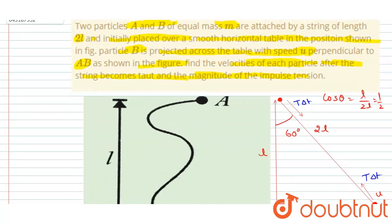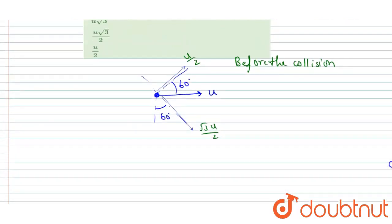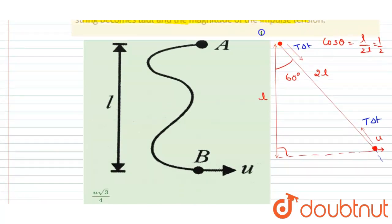Now if you see the question, find the velocities of each particle when the string becomes taut. So let us find out the velocity of A and B now. If you see, this will remain with B as it is, this won't change, only this component will change, and this is A. So A will experience an impulse along the string.